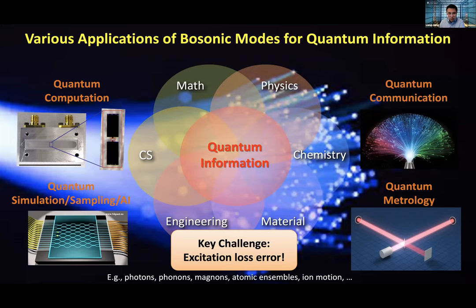We know that if we send a photon over a fiber channel, at the end it will be absorbed. So the information stored in these photons would disappear. Therefore, we would like to maintain the information, especially the encoded quantum information, even in the presence of excitation loss.